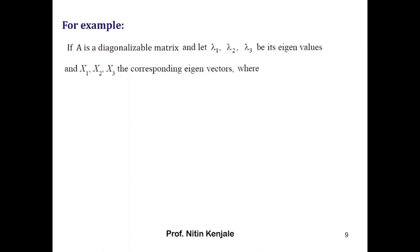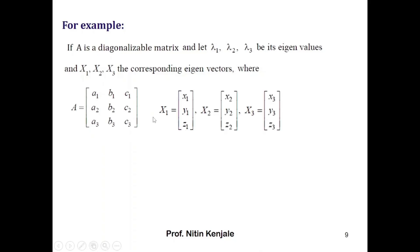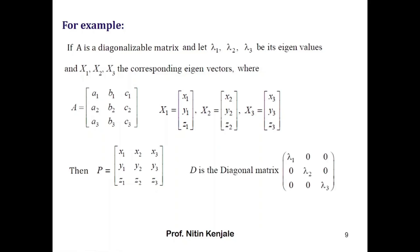Let A be a diagonalizable matrix with eigenvalues λ1, λ2, and λ3 with corresponding eigenvectors x1, x2, and x3. The invertible matrix P has x1 as its first column, x2 as its second column, and x3 as its third column. The diagonal matrix D has diagonal entries λ1, λ2, and λ3, so A equals P D P-inverse.